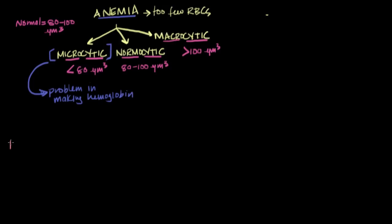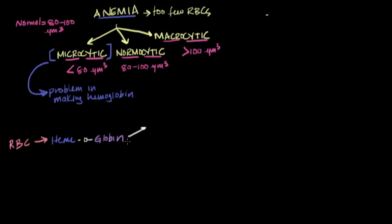Let's start from the very beginning — what is hemoglobin? Red blood cells are full of hemoglobin, and hemoglobin is actually what binds to the oxygen, giving a red blood cell the ability or the capacity to carry oxygen. Hemoglobin has two main components: the first is heme, and the second is called globin. Globin is a polypeptide — a chain of amino acids not complex enough to be called a protein.